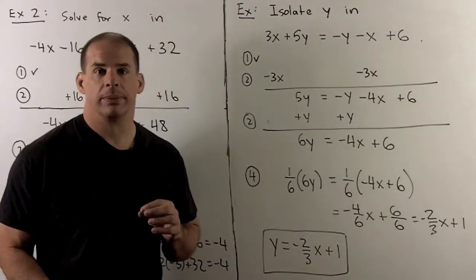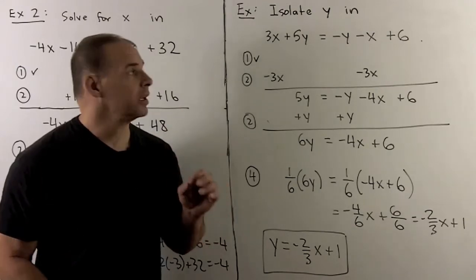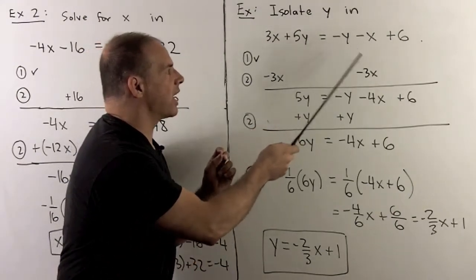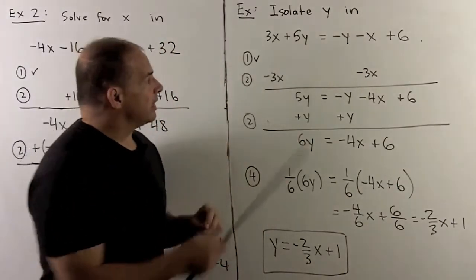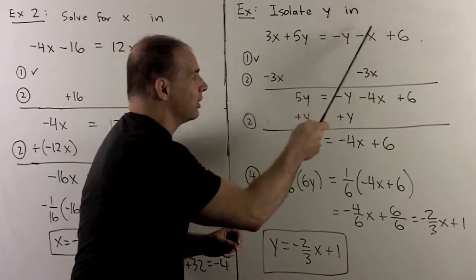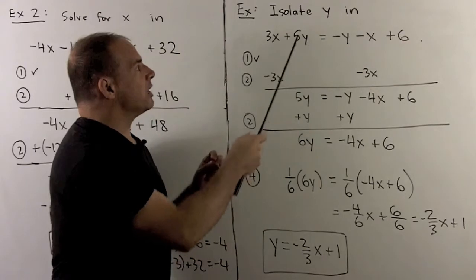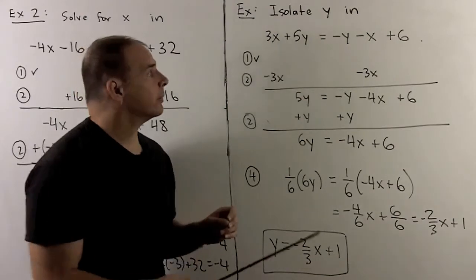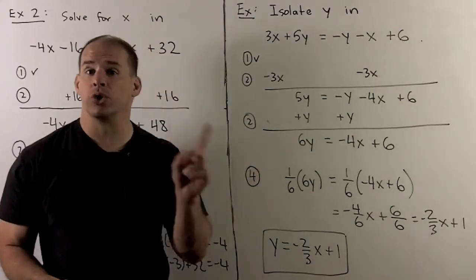Let's try one with two variables. We'll have an equation in two variables and isolate one of them. I want to isolate y in the equation 3x + 5y = -y - x + 6. It's the same checklist. Starting by seeing if we can simplify — I can't combine x and y terms or numbers — so there's nothing to simplify. Now I want to isolate y: push the 3x to the other side as minus 3x, and take the minus y and move it to the left-hand side as a plus y.